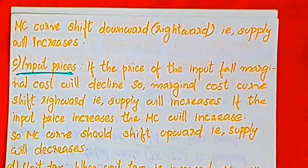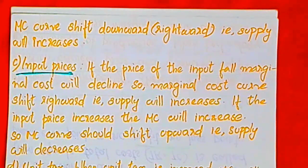If the input price falls, supply curve shifts up and increases. This is a negative relation between input price and supply.